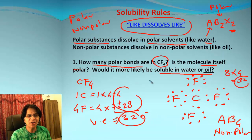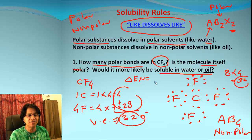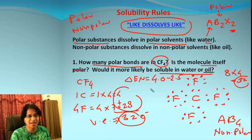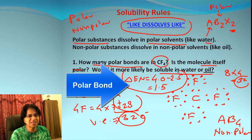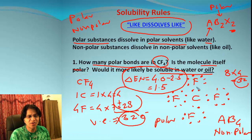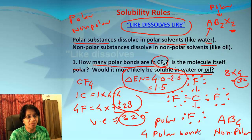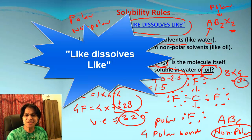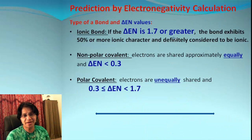Now, how about each bond? For each bond, we need to find delta En — the difference in electronegativity. For fluorine it is 4.0, and for carbon it is 2.5. When we subtract that, it is 1.5, which makes each bond a polar bond. There are 4 polar bonds, but the compound itself is nonpolar. So it will not dissolve in water, but it will dissolve in oil.